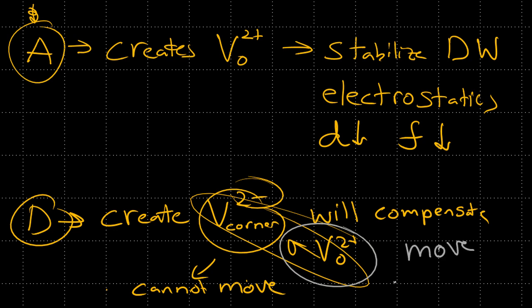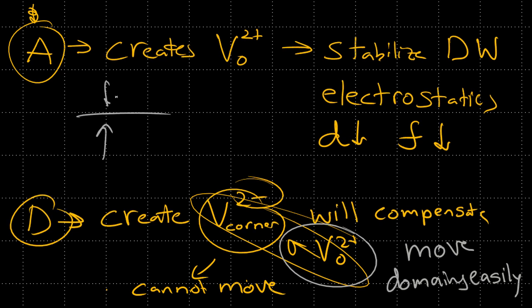When we say moving domain walls, we don't mean the domains themselves are physically moving — we mean the interface or wall grows, so domains grow into each other. If we have two domains side by side, one will start to grow bigger and the other will shrink, based on the electric field or stress applied and the energy instability that causes one to dominate over the other.